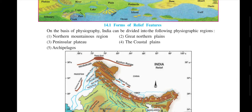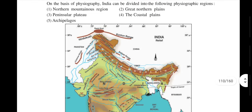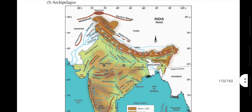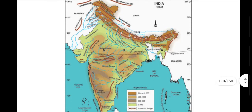The five divisions of India's physiography are: the Northern Mountainous Region, the Great Northern Plains, the Peninsula Plateau, the Coastal Plain, and the Archipelagoes. You can see a map here where these different regions are marked.